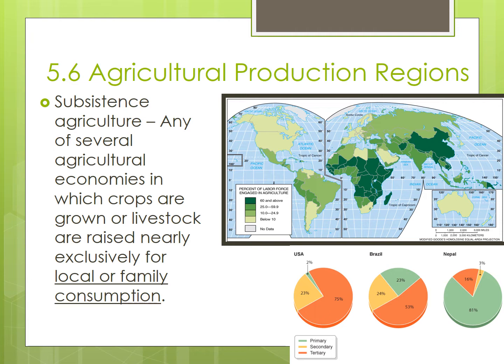That isn't to say that subsistence farmers won't sell anything. They may sell a little bit of whatever surplus they generate, but it may go to pay government taxes rather than for profit. Since subsistence farmers are producing food for their families rather than for sale, they tend to be in more peripheral areas and may live in fairly isolated communities.